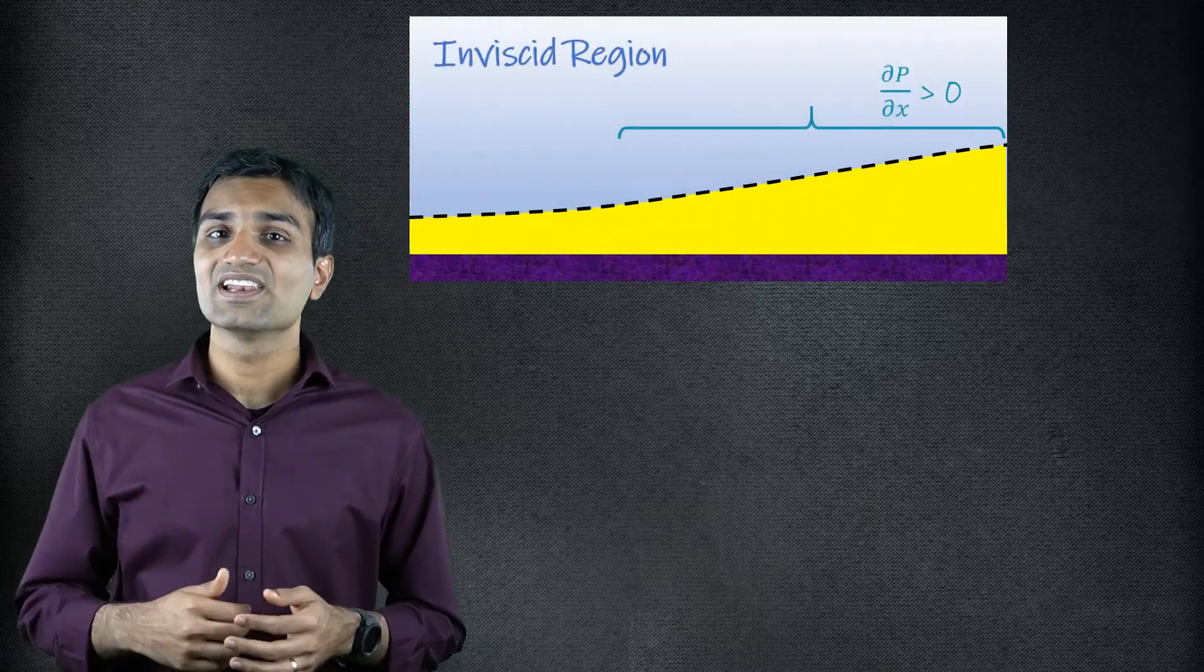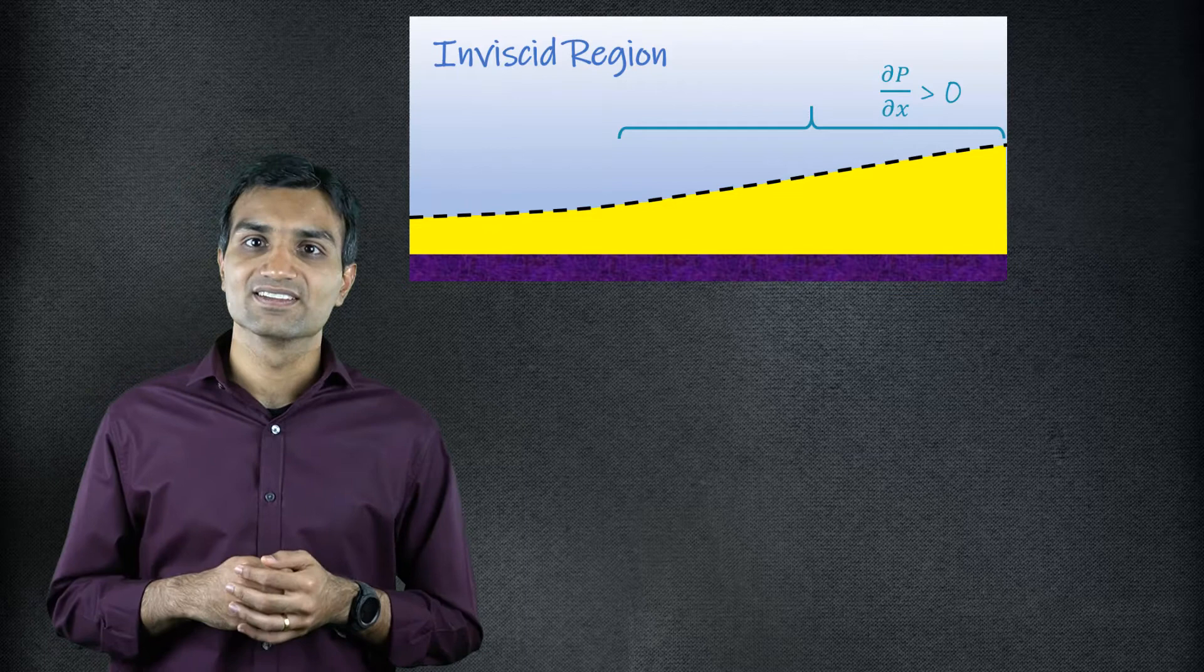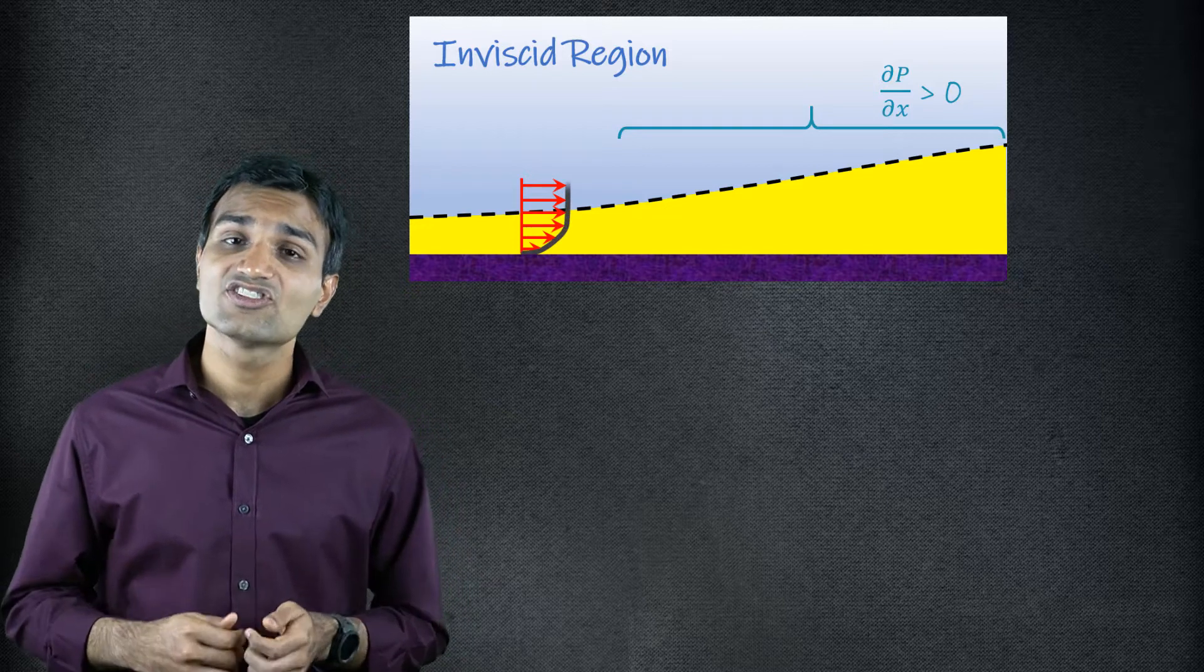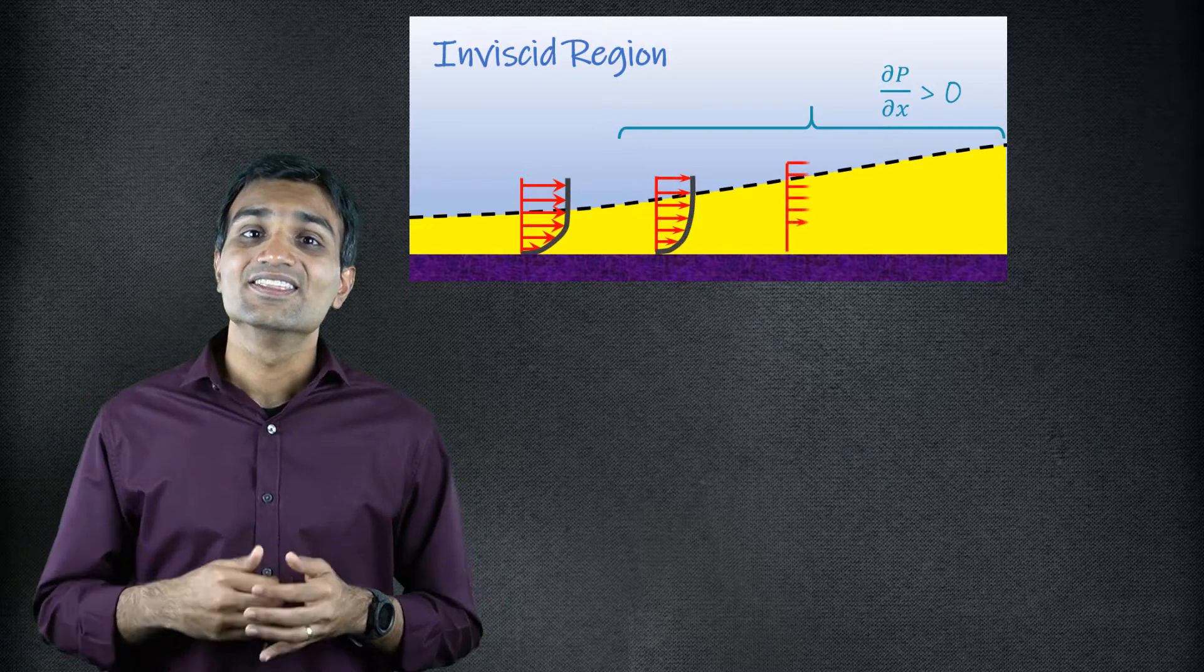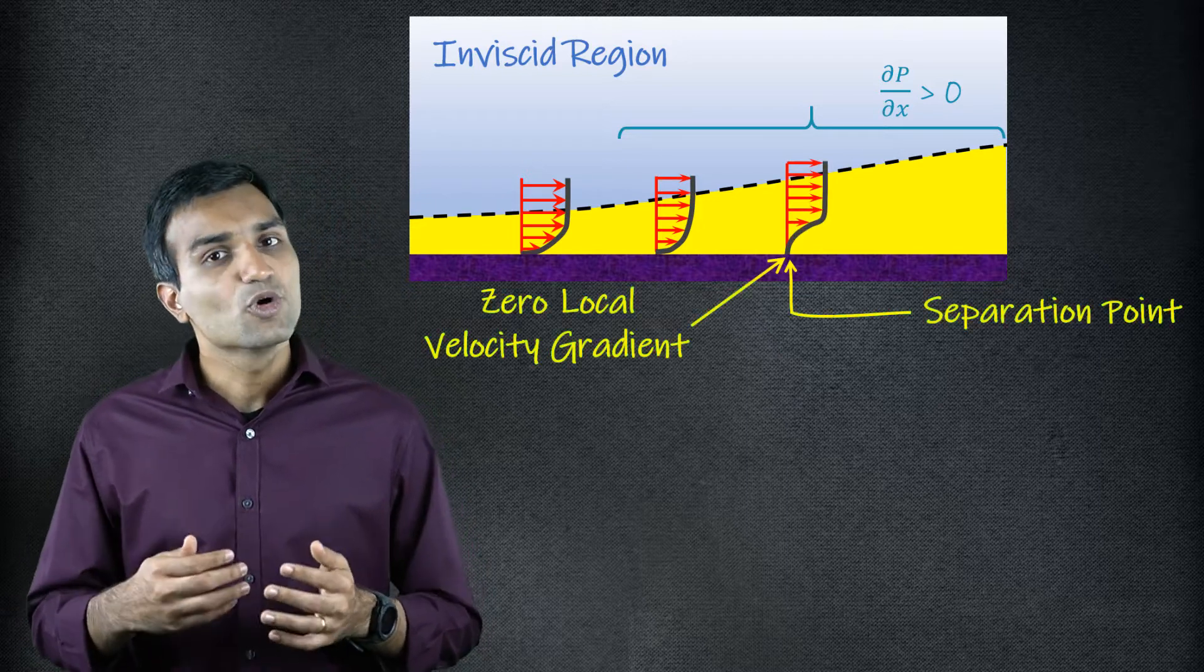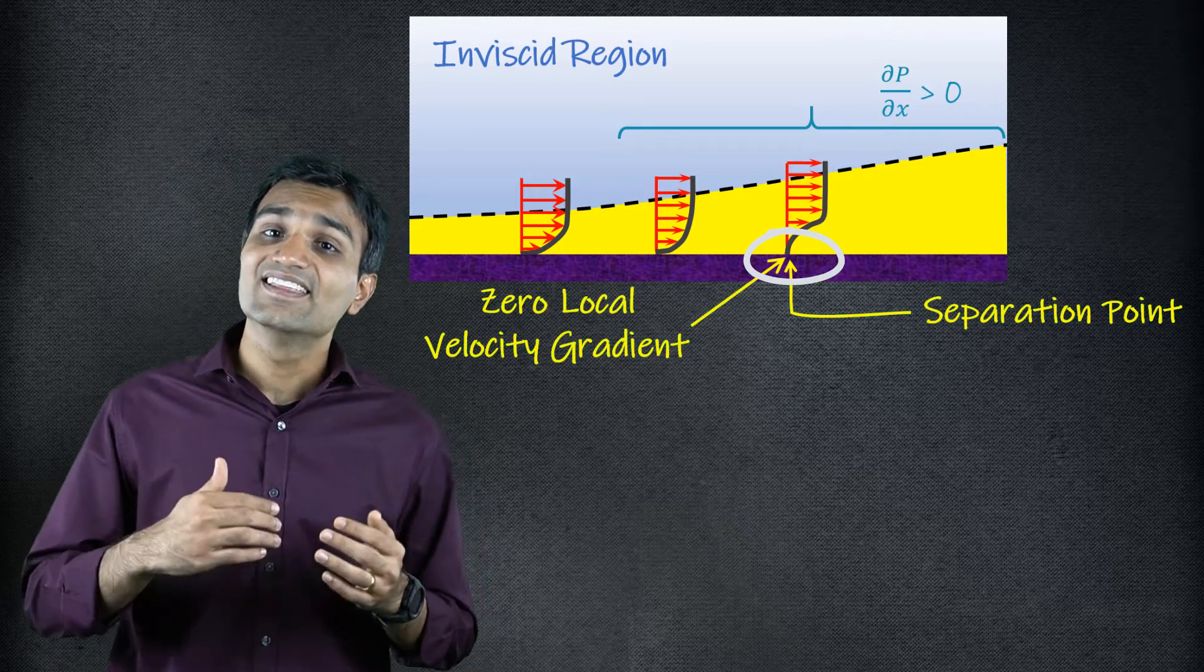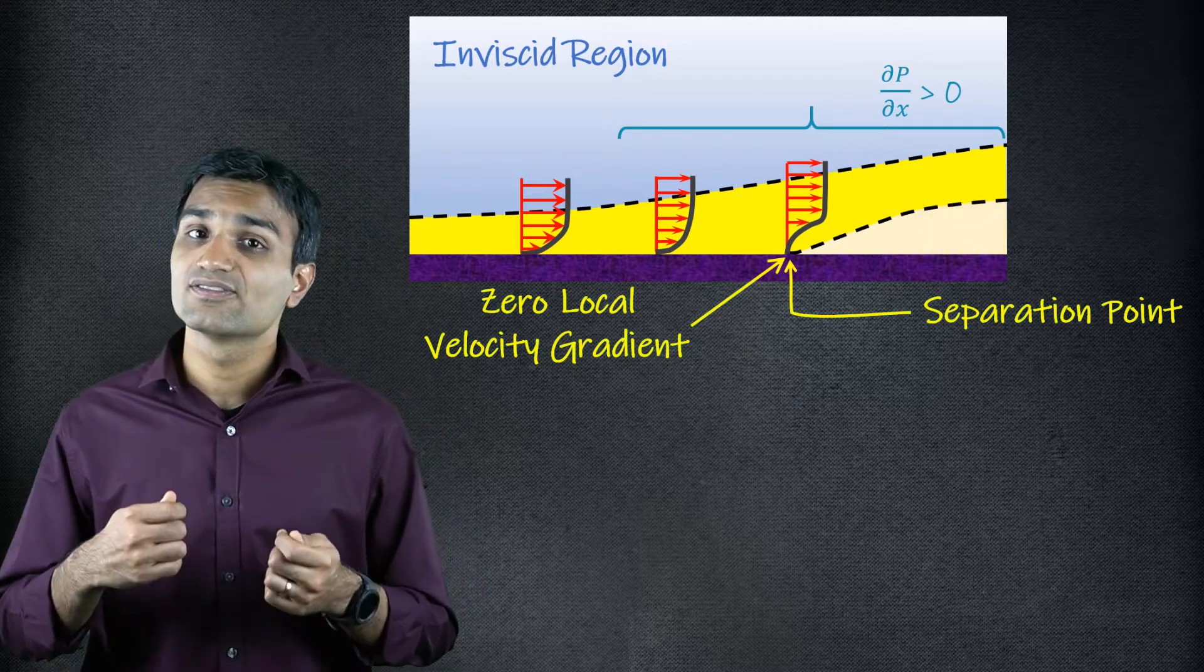However, for certain boundary layer flows, the fluid encounters adverse pressure gradients. This means the pressure is locally increasing in the direction of the flow. Under such conditions, the flow is struggling and the local velocity gradient approaches zero. At this point, the flow detaches from the surface and this detachment of fluid flow from the surface is referred to as flow separation.